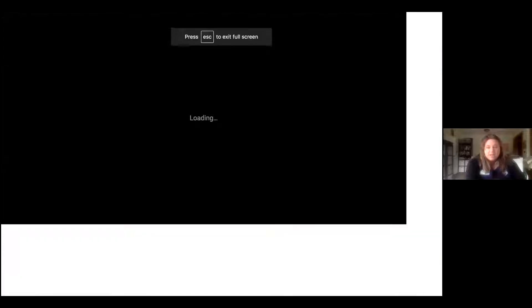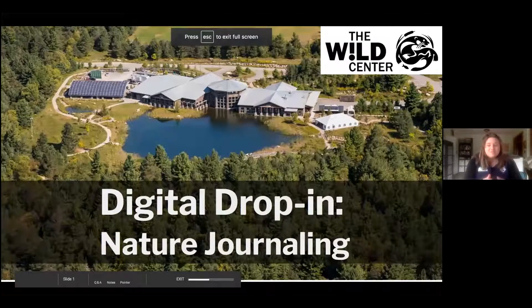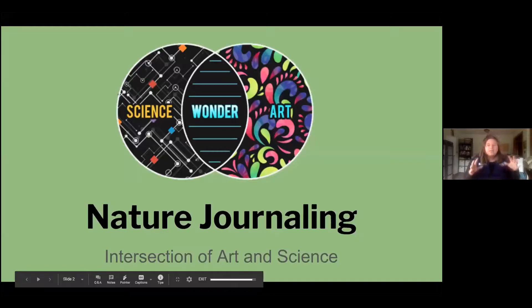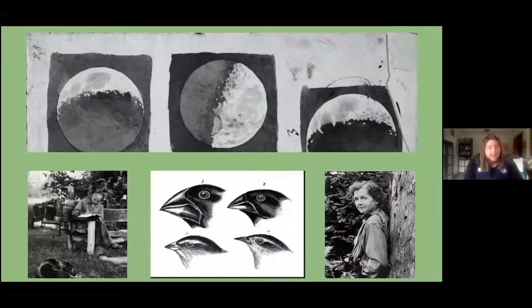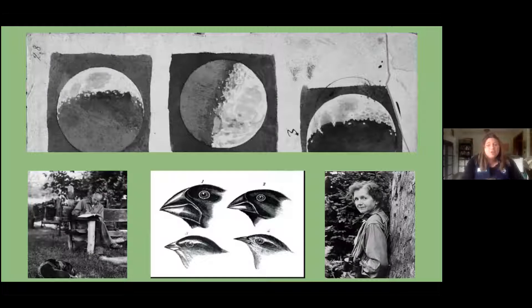Let me share with you our challenge for today. Nature journaling is one of my favorite things to do. Nature journaling is really where the intersection of art and science meet. So many scientists utilize nature journaling to help them with their observations. Here are a couple examples of scientists who utilized nature journaling: the top picture is from Galileo, the center is from Darwin. We have Aldo Leopold on the left and Rachel Carson on the right. These are just a few notable scientists who nature journaled consistently to make observations and draw connections to things in their surroundings. A lot of scientists are actually artists as well — it's a great way to express yourself and express what you see.